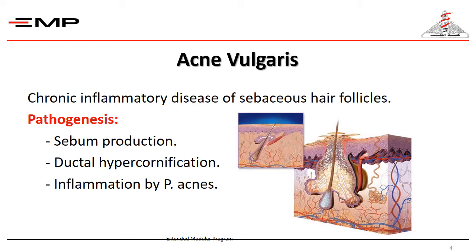Diseases of sebaceous glands — acne vulgaris. Acne vulgaris is a chronic inflammatory disease of sebaceous hair follicles. It results from increased sebum production, pilosebaceous duct cornification or hyperkeratinization, colonization of the duct by Propionibacterium acnes, and the release of inflammatory mediators.